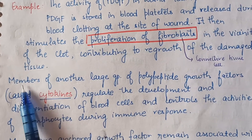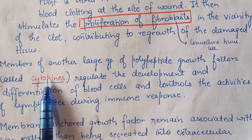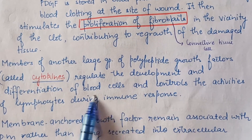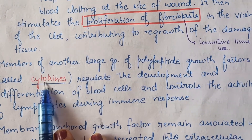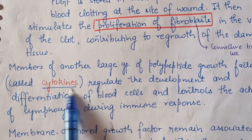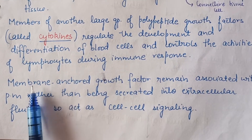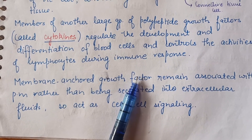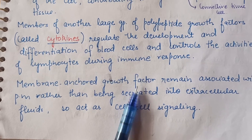Another important example of growth factors is cytokines. Cytokines regulate the development and differentiation of blood cells and control the activity of lymphocytes during immune response. In the immune system, cytokines play a major role. All growth factors have cell surface receptors or plasma membrane receptors.